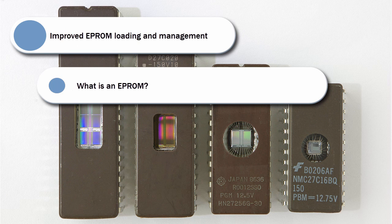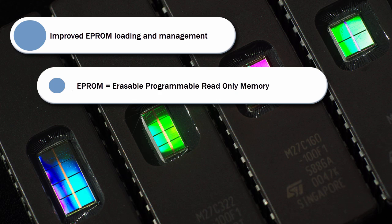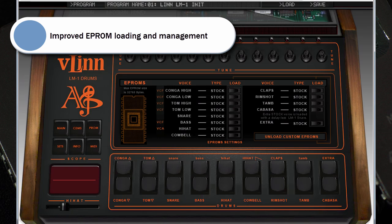An EEPROM is a special type of memory chip that retains its contents until it's exposed to ultraviolet light — it stands for Erasable Programmable Read-Only Memory. It is where the drum samples were stored on the old hardware. VLen 1 and 2 can both load EEPROMs from compatible drum machines. Now in version 2, all the EEPROMs can be replaced instead of only 7 of them, and you no longer need to worry about their size when loading as this is handled automatically. There is also a nicer layout with improved graphics and a handy Unload Custom EEPROMs button to reset back to the stock sounds.